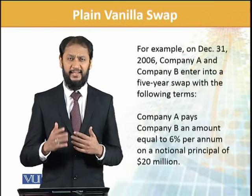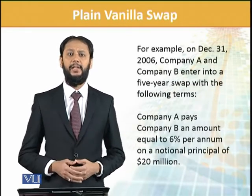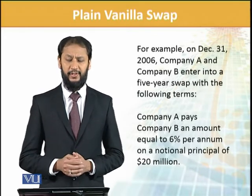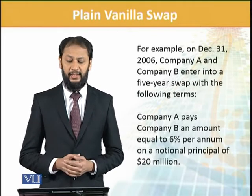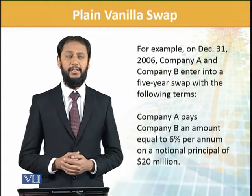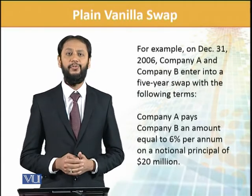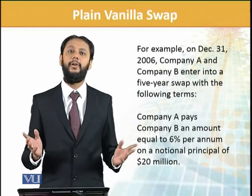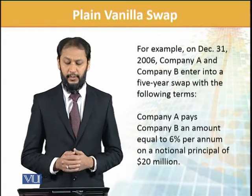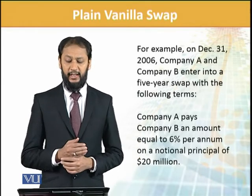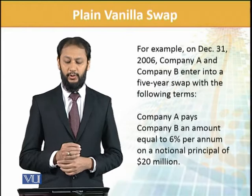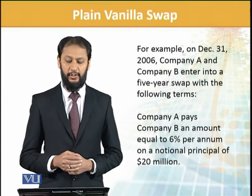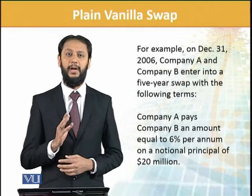Now, an example will give a clear picture. On December 31st, 2006, Company A and Company B entered into a 5-year swap with the following terms. Company A pays Company B an amount equal to 6% per annum on a notional principal of 20 million dollars.